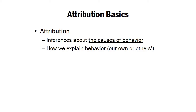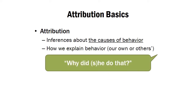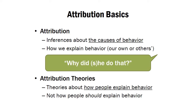In general, we might see someone do something and ask ourselves, why did that person do that? Why did he do X? Why did she do Y? And the answers we come up with as the cause is what's known as attribution — we attribute the behavior to some cause.